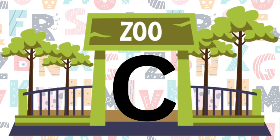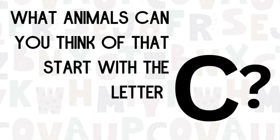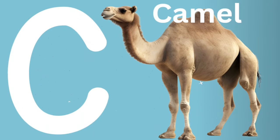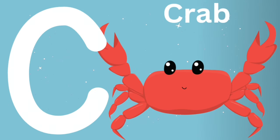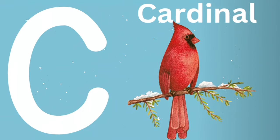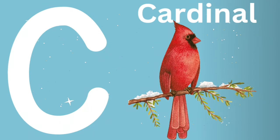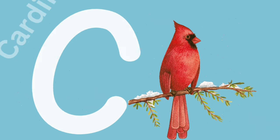Can you think of any animals at the zoo that starts with the letter C? The C says K. What about the camel? K, K, camel. Are there any other animals that start with the letter C? What about the crab? K, K, crab. Or maybe the beautiful red cardinal? K, K, cardinal.